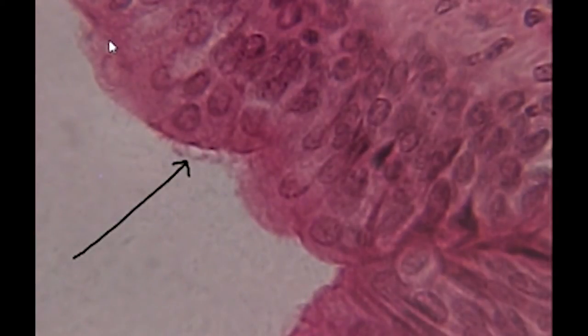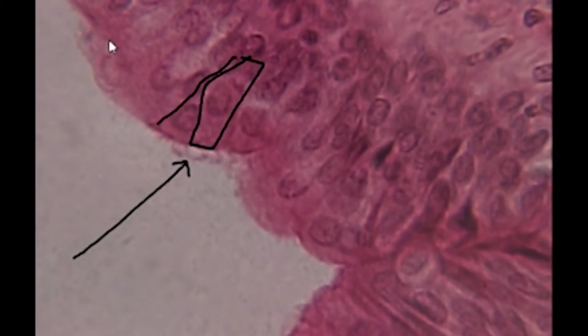Now the other thing about the tissue that we've talked about before is that it's pseudo-stratified or falsely layered. I'm going to try and draw an outline around some of these cells so you can see what we're talking about. Here are three cells. We have the cilia attached to them.